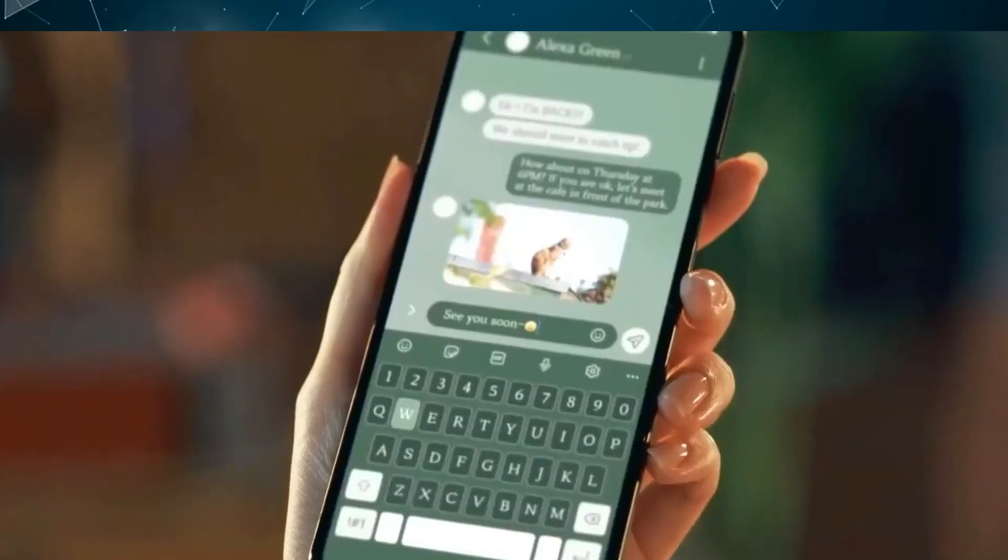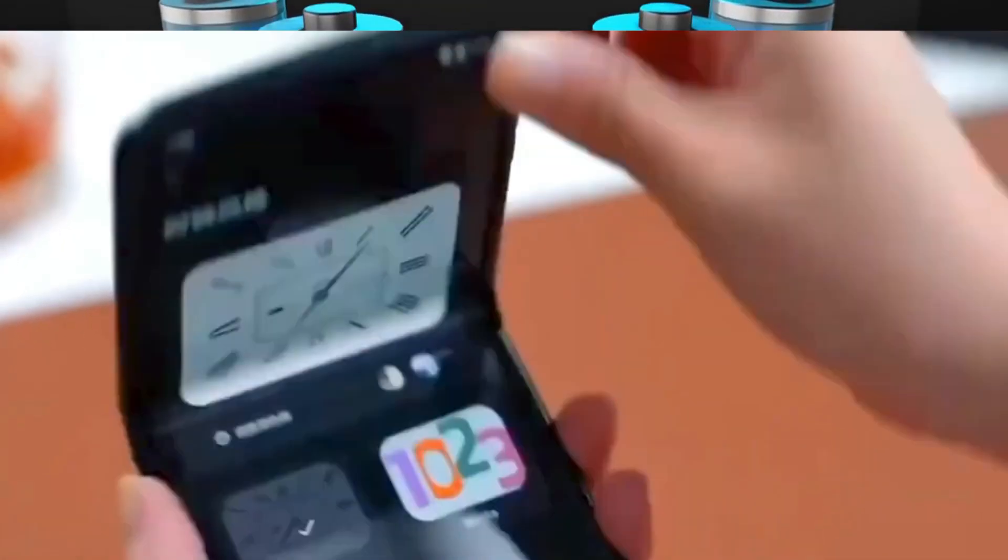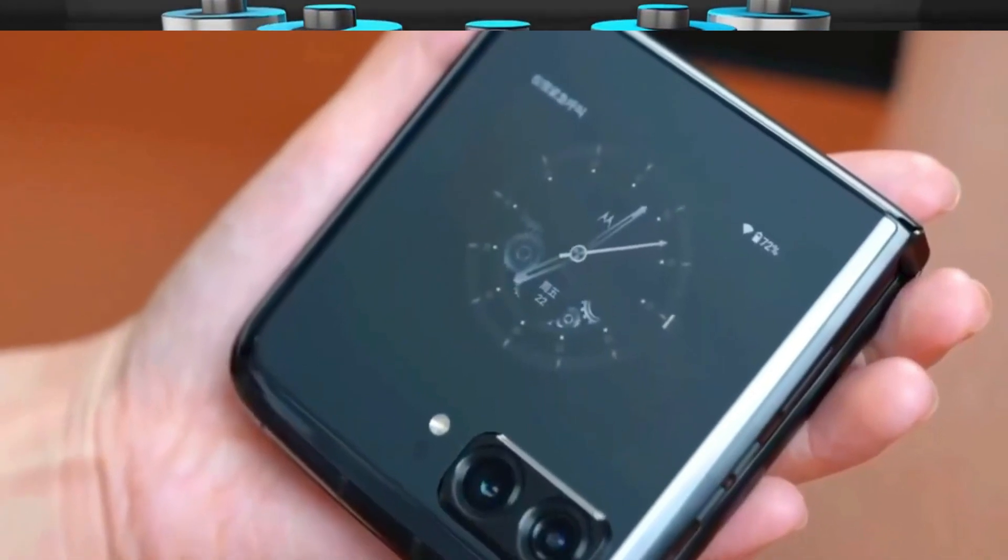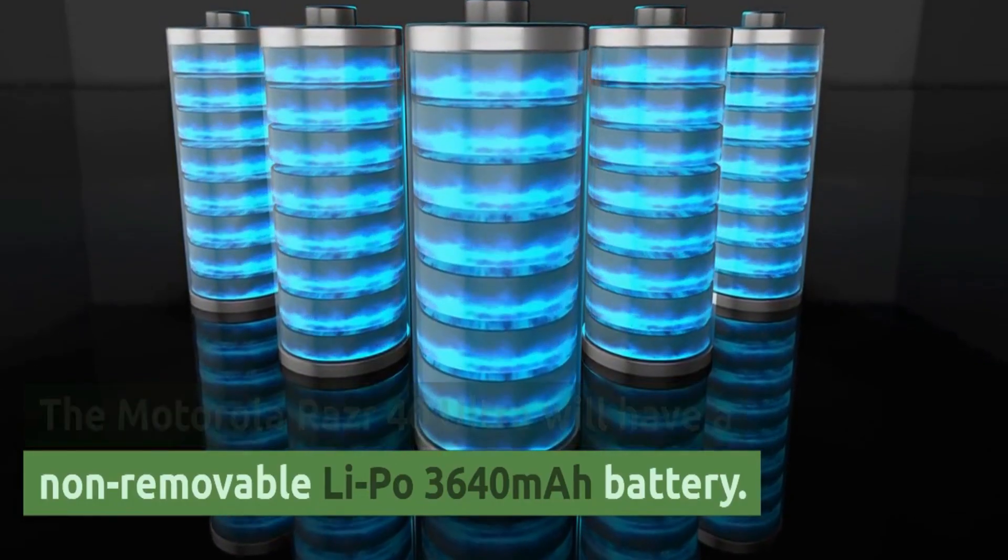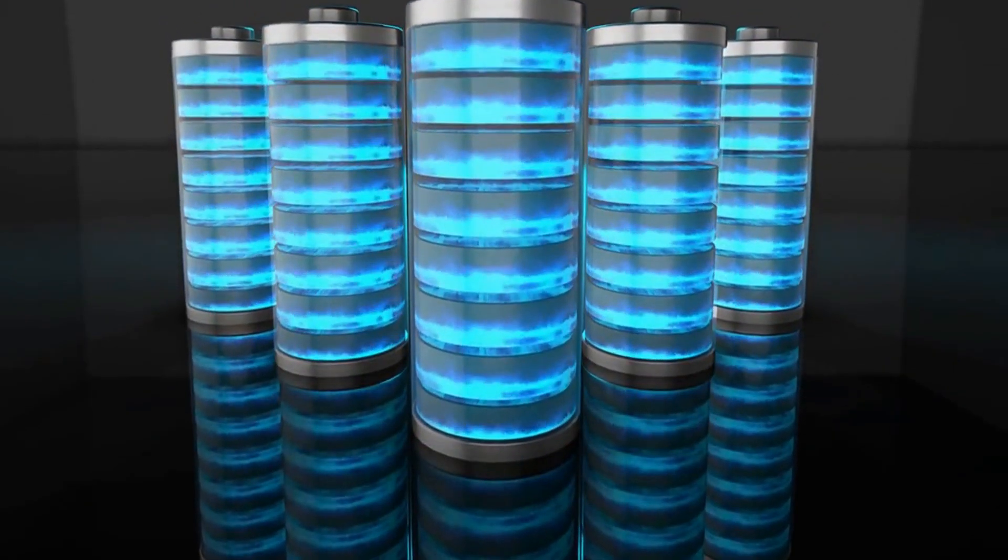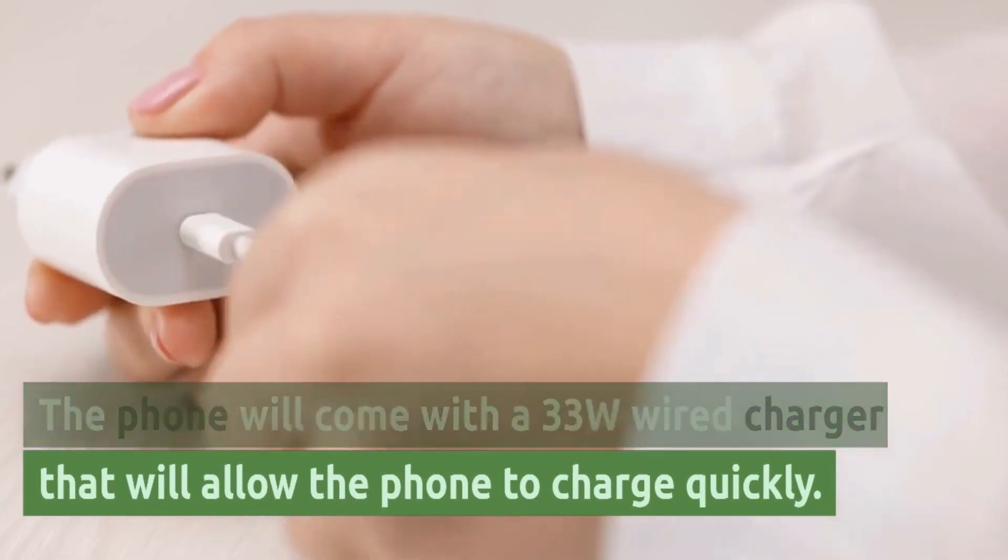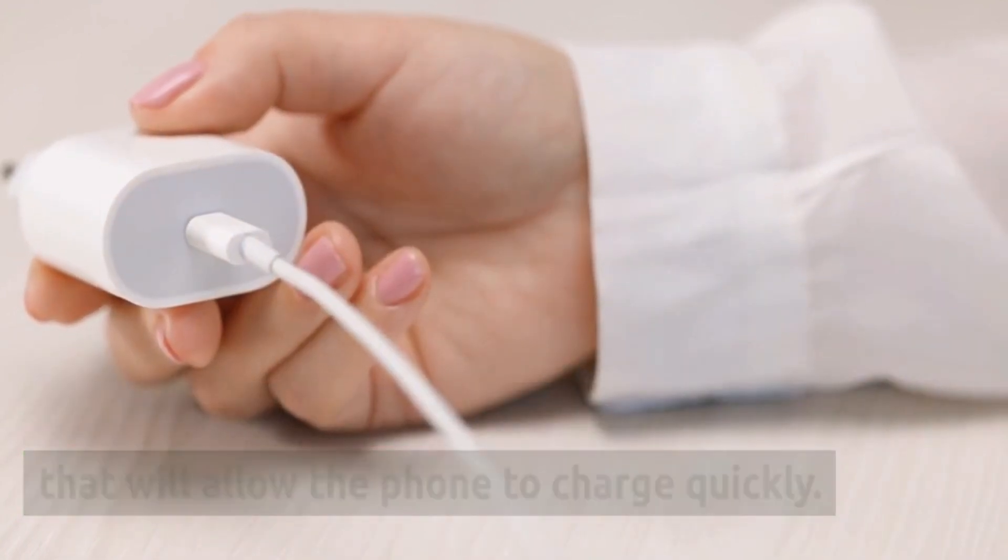Battery and charging. The Motorola RAZR 40 Ultra will have a non-removable LiPo 3640 mAh battery. The phone will come with a 33W wired charger that will allow the phone to charge quickly.